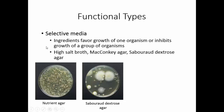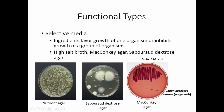Here you can see the molds growing rather abundantly on Sabouraud dextrose agar — they were overgrown by bacteria on the other plate. MacConkey's agar also acts as a selective agar; it will select for gram-negative organisms. E. coli grows well on it, but Staphylococcus aureus, which is a gram-positive organism, will not grow on MacConkey agar.